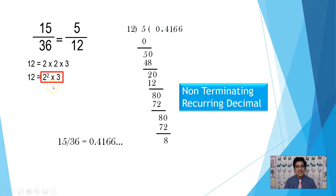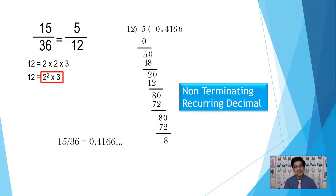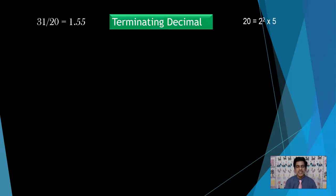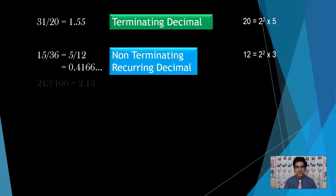Observe the denominator: its prime factorization is 2 squared into 3. Since there is a factor of 3 — other than 2 and 5 — the decimal expansion is non-terminating and recurring. So 31 by 20 is terminating and 15 by 36 is non-terminating recurring.